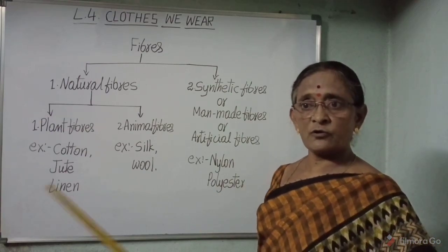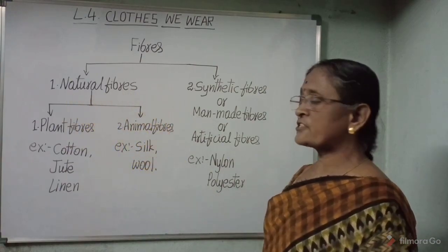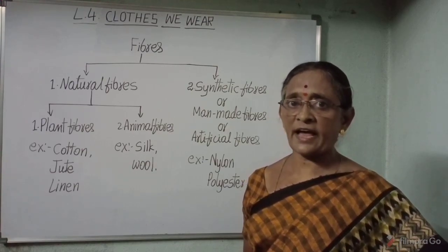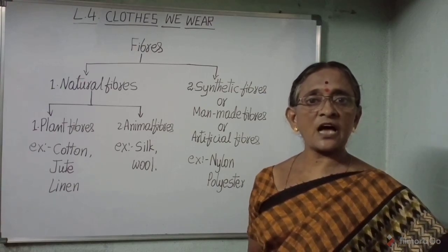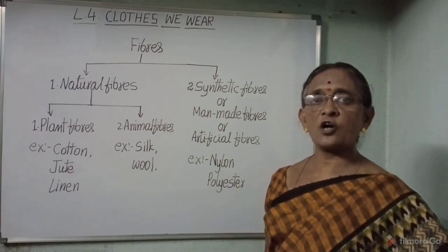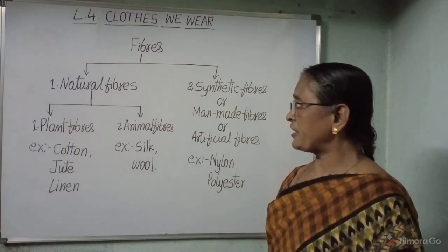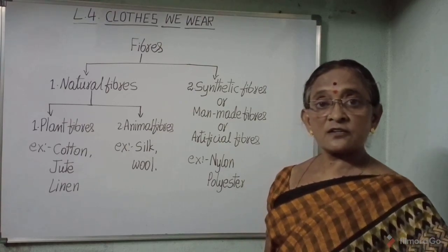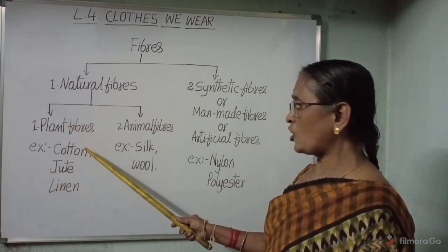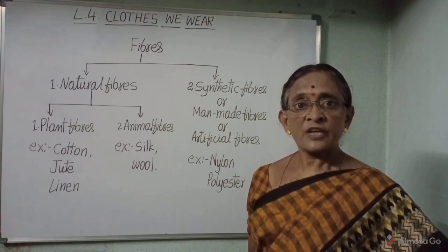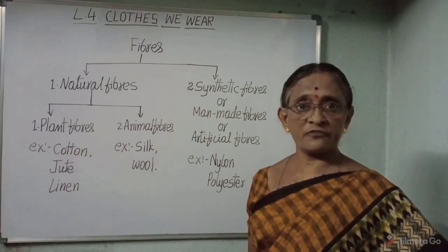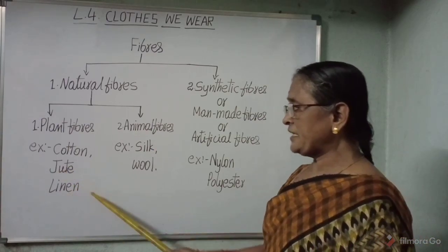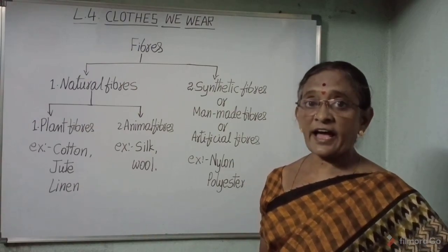The fibers which are obtained from natural sources are called natural fibers, obtained from either plants or animals. The common plant fibers are cotton, jute, and linen. Cotton is obtained from the fruit of the cotton plant. Jute is obtained from the stem of the jute plant. Linen is obtained from the stem of the flax plant.